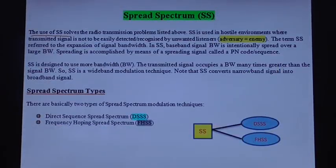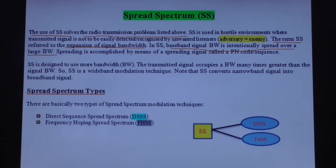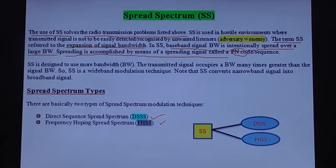The use of spread spectrum solves the radio transmission problems listed previously. The term spread spectrum refers to the expansion of the input signal bandwidth. The baseband signal bandwidth is intentionally spread over a large bandwidth. This spreading is accomplished by means of a spreading signal called the PN sequence. Basic types of spread spectrum communication systems are Direct Sequence Spread Spectrum (DSSS) and Frequency Hopping Spread Spectrum (FHSS).